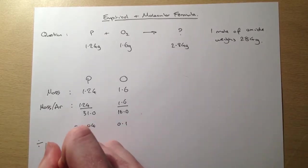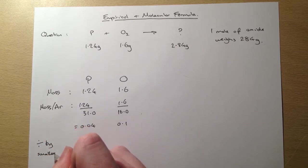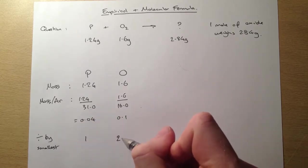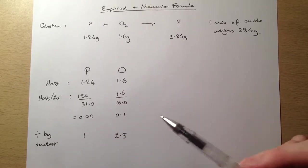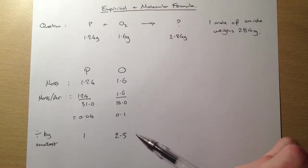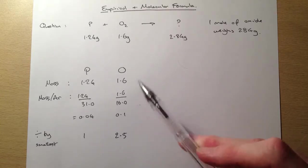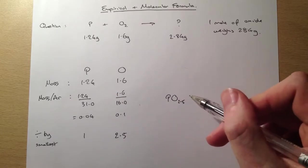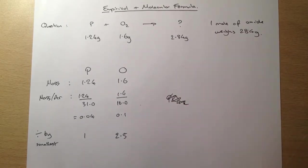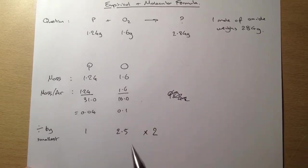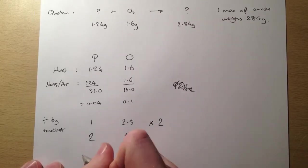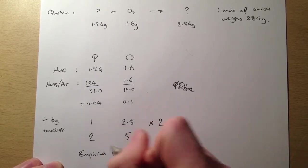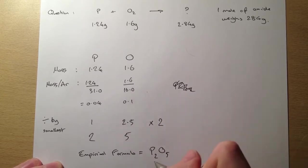So the next step is going to be to divide by the smallest of these values. Obviously, the smallest of these values is 0.04. So divide 0.04 into itself, you get 1, and into 0.1 you get 2.5. Now, you've got to remember here that you cannot have 2.5. The empirical formula is the simplest whole number ratio of elements in a compound. The reason for that is we could not have P O 2.5. You cannot have 2.5 of an atom. So in order to get this to a whole number ratio, we need to multiply that by 2. So we'll have 2 there, we'll have 5 there. So the empirical formula of the oxide is going to be P2O5. That's our empirical formula.